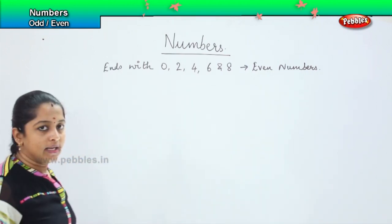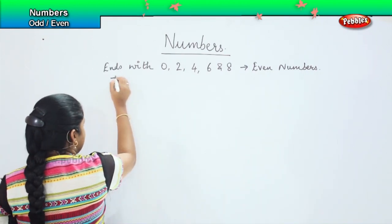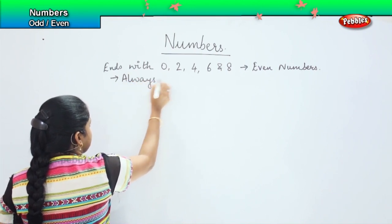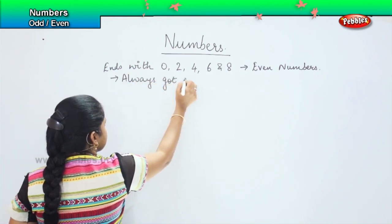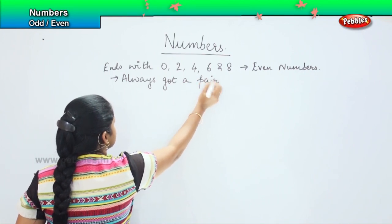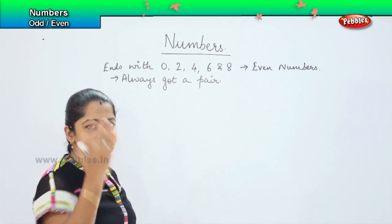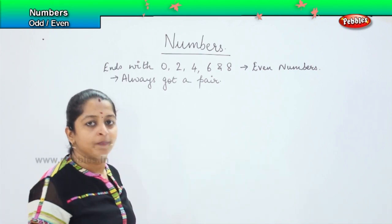You can also tell the even number has always got a pair. You always find a pair with the even number. It's easy for you to divide them into pairs.